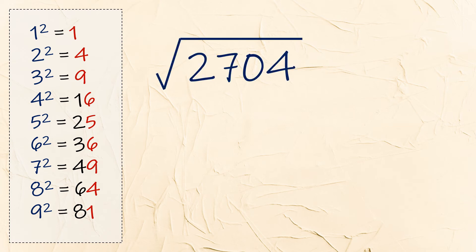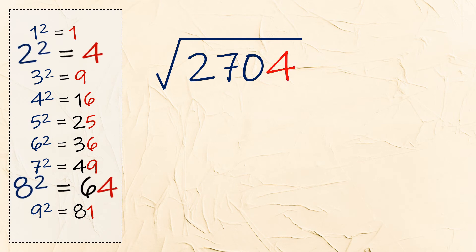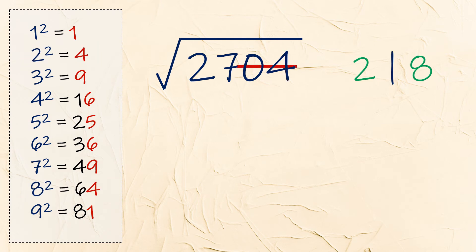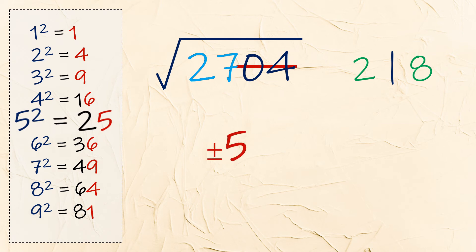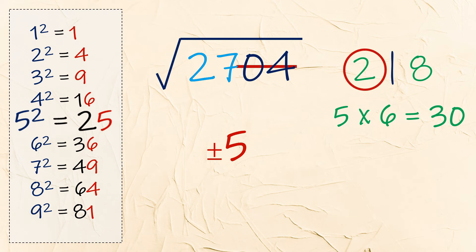Let's try more. The square root of 2704. Last digit is 4, so we have 2 and 8 again. Cross out the last two digits — now we have 27. 25 is closest to 27, so 5 is our first digit. Multiply 5 by the next number, 6 — we get 30. Since 27 is less than 30, the answer is positive and negative 52.